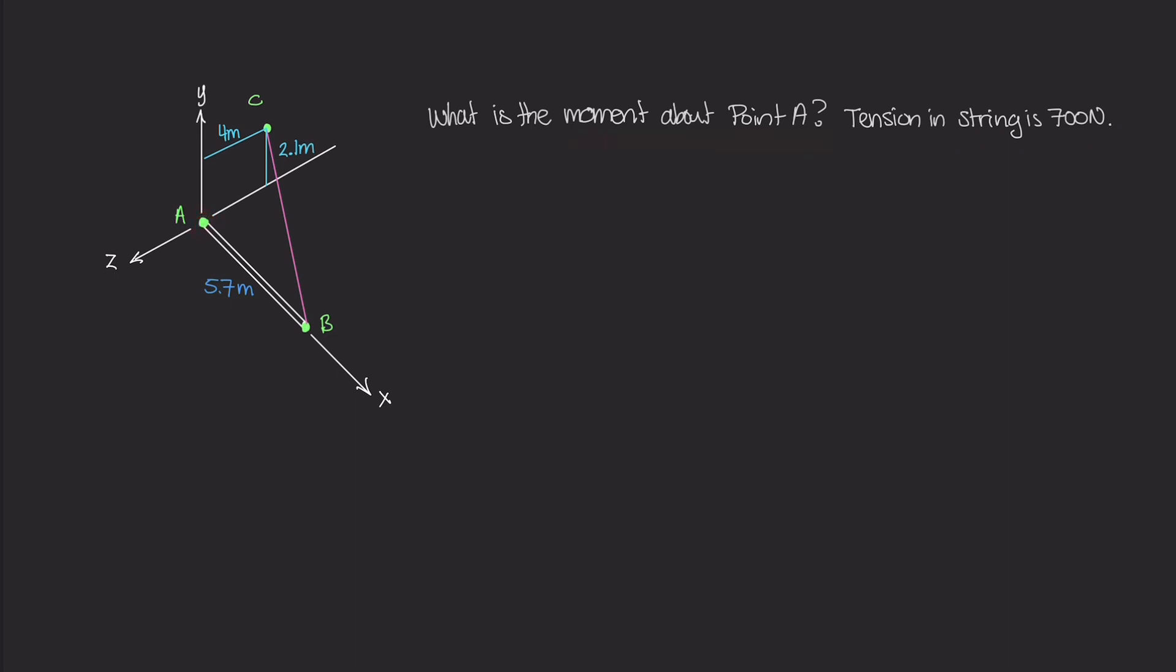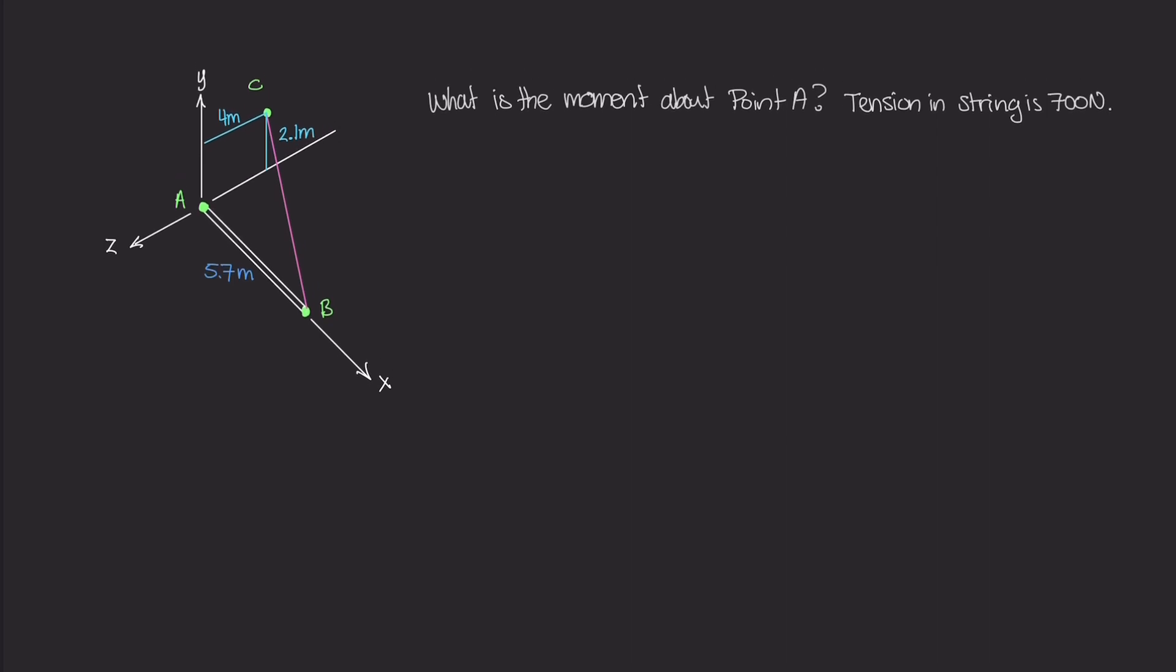So this tension is obviously acting this way and that force right there on point B is going to cause a moment or induce a moment about point A because this is a rigid body. The tension in that rope is 700 newtons and the question is asking what is the moment about point A? I've already drawn in all of the axes. We have the positive x-axis this way, the y-axis this way, and the z-axis this way.